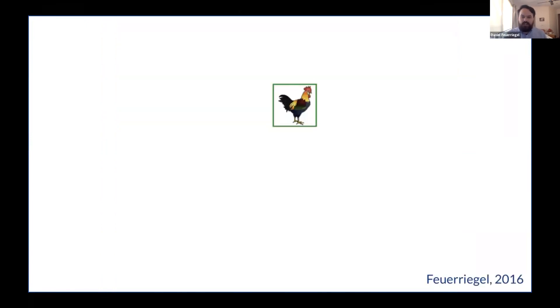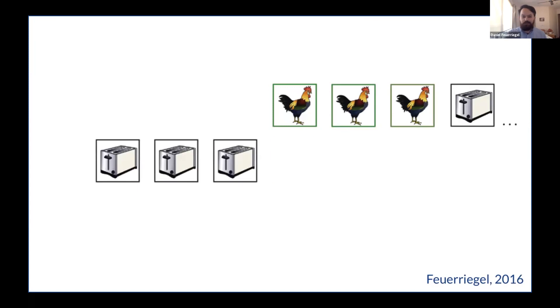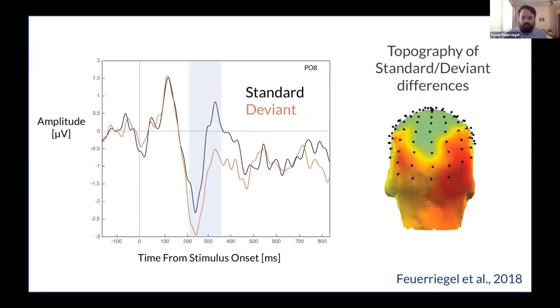So people have investigated this in the lab using oddball sequences in which individual images are presented one at a time. So here we have rooster, rooster, rooster, rooster, toaster. And so based on this sequence, you might come to expect the rooster to appear because of its higher prevalence rather than sort of rarer toaster image. And conversely, you might have the opposite. So toaster, toaster, toaster, toaster, wait for it, rooster. And here we can compare evoked brain responses by the same images in each of these two contexts, labeled the standard and the deviant. And so there's been hundreds of ERP studies comparing these images and they typically find more negative going evoked potentials over bilateral posterior sites for deviants compared to standards.